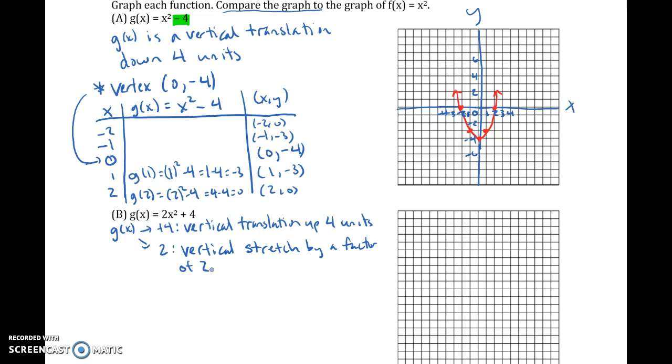And then remember, whenever we do a vertical stretch, it doesn't really change the vertex, it's at (0, 0). So what changes the vertex here is the plus 4. So when I create my table, I want to put 0 in the middle and I know the vertex isn't going to be at (0, 0). It's going to be moving up 4 units to be (0, 4).